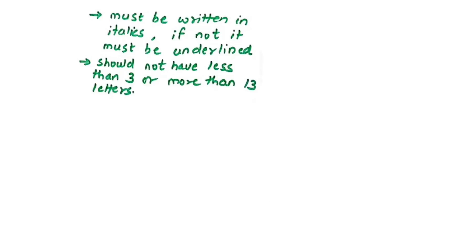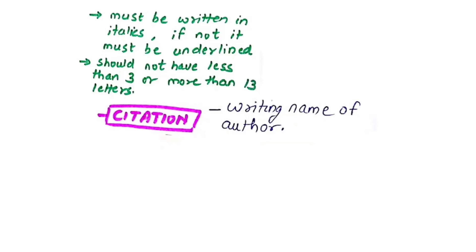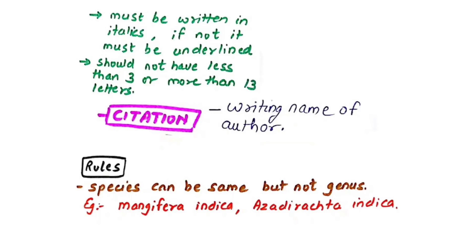Rules of binomial nomenclature: the genus always starts with a capital letter, the species always starts with a small letter. They must be written in italics; if not italicized, they must be underlined separately. The name should not be less than three or more than thirteen letters. For example, Azadirachta indica (neem) follows these rules. Writing the scientist's name after the binomial name is called a citation — e.g., Mangifera indica L. (L. for Linnaeus).